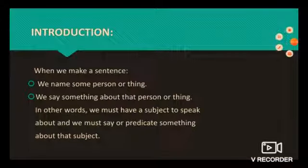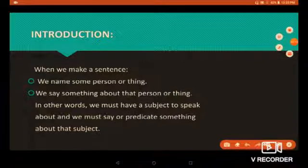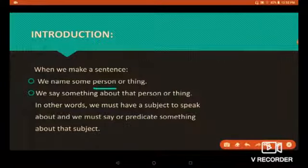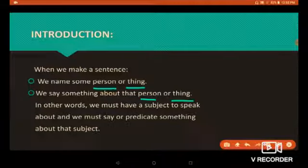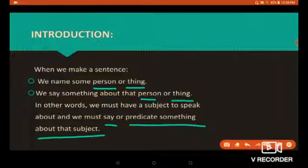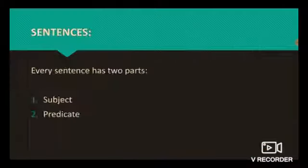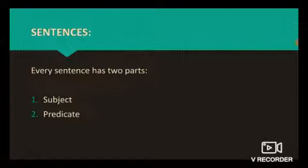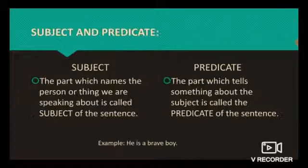Today, I will introduce you to subject and predicate. When we make a sentence, we name some person or thing and say something about that person or thing. In other words, we must have a subject to speak about, and we must say or predicate something about that subject. Every sentence has two parts: subject and predicate.